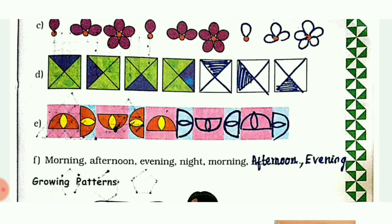The first picture is a semi-circle. In the second picture it is shifted 90 degrees. In the third picture it is moving to an inward semi-circle. In this way this pattern is getting repeated. The next pattern is: morning, afternoon, evening, night - then morning again. This is the pattern.